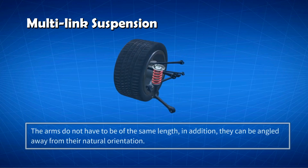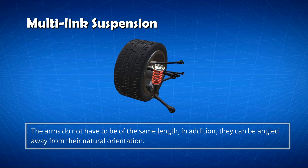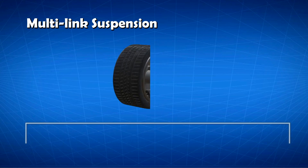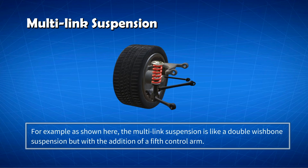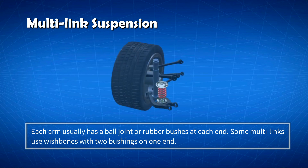The arms do not have to be the same length, and they can be angled away from their natural orientation. For example, as shown here, the multilink suspension is like a double wishbone suspension but with the addition of a fifth control arm. Each arm usually has a ball joint or rubber bushes at each end. Some multilinks use wishbones with two bushings on one end, and some multilinks also use trailing arms.